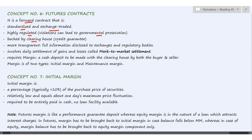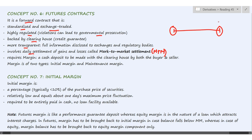Futures contracts are backed by a clearing house, which means there is lesser default risk. These are more transparent than forward contracts. They involve daily settlement of gains and losses, which is called mark-to-market settlement or MTM. In a forward contract, there is no payment at initiation nor during the term — only a payoff is made on the expiry date.